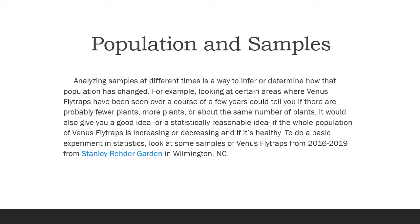Analyzing samples from different times is one way you can determine how a population changes. For example, if you look at certain areas where Venus Flytraps have been over the course of a few years, that would tell you if there are fewer plants, more plants, or about the same number — giving you a statistically reasonable idea of whether that population is increasing, decreasing, or healthy.